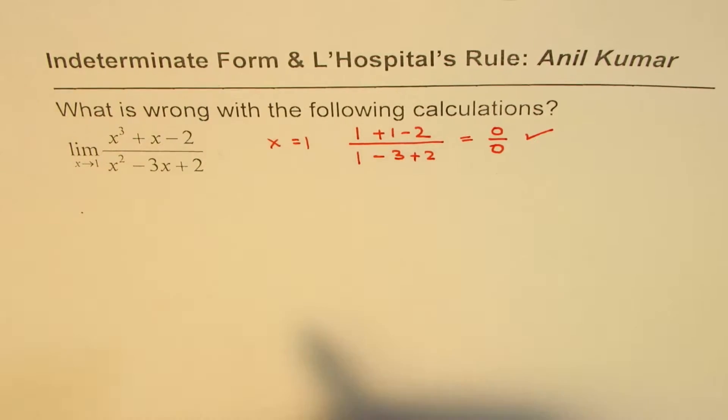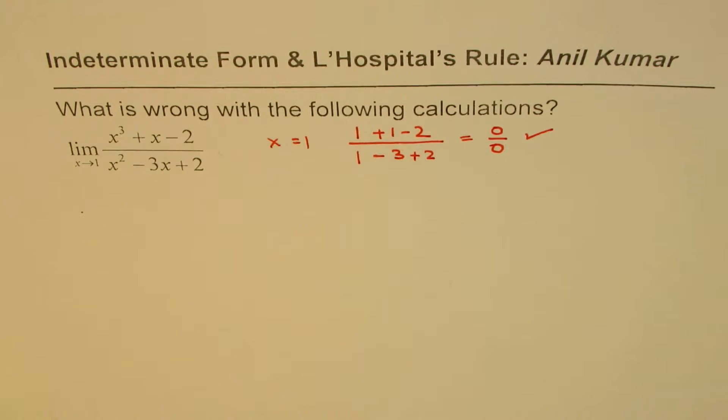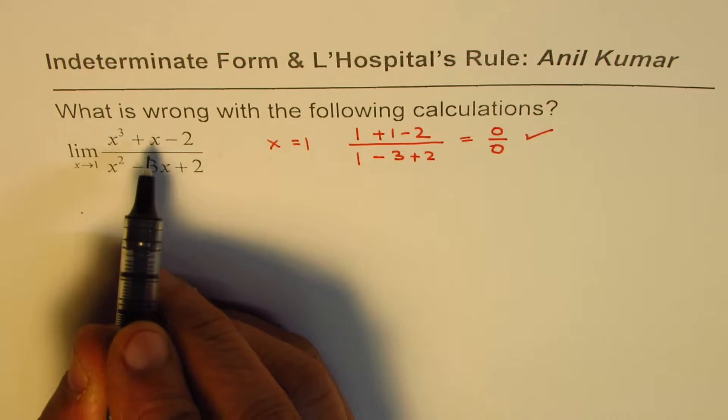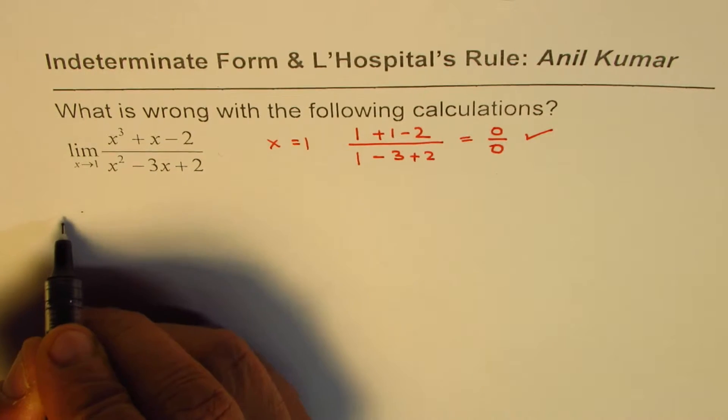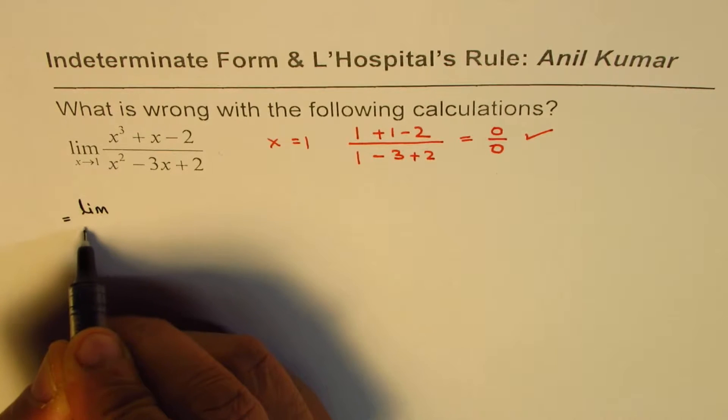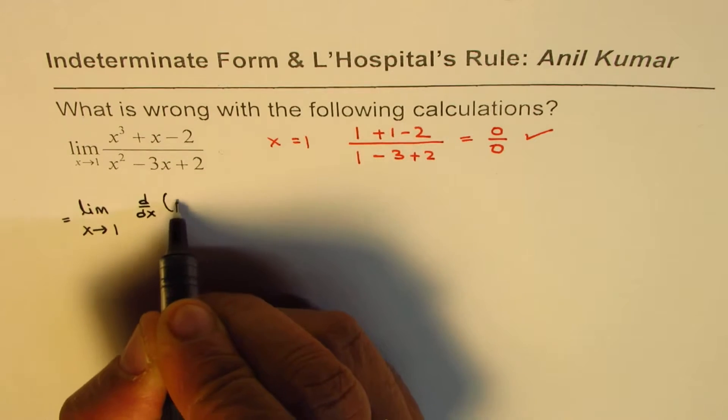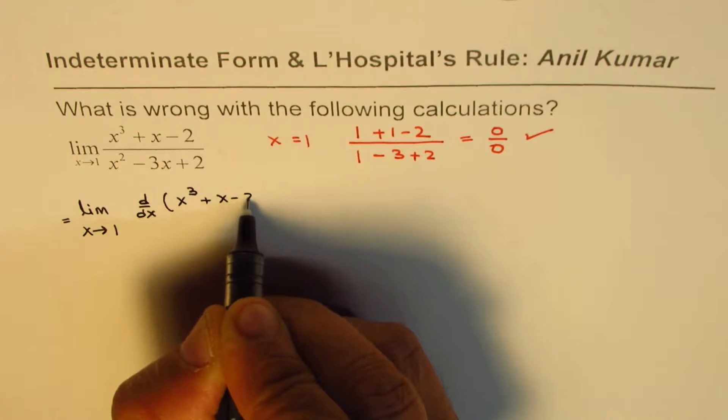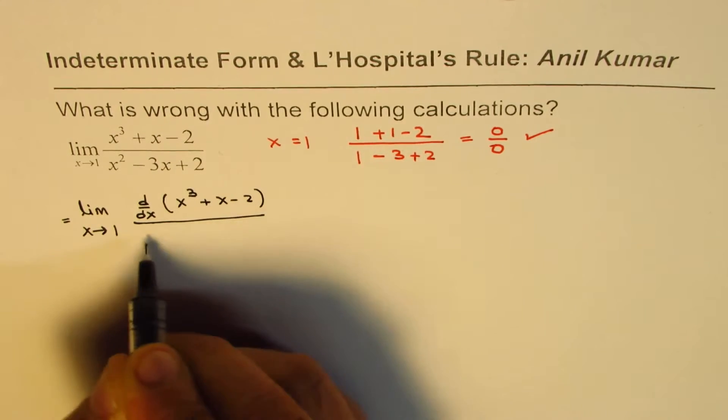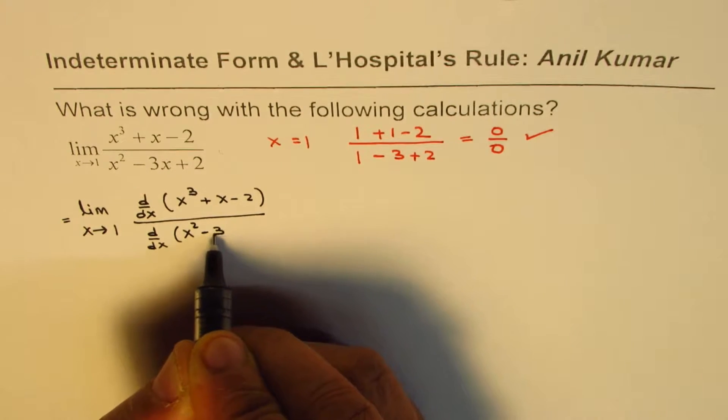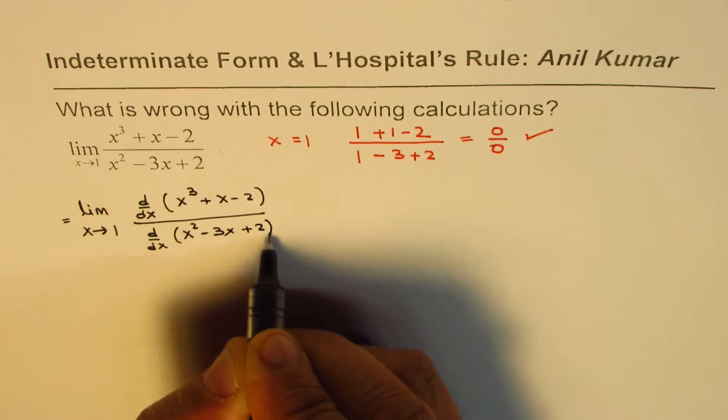So that is the required indeterminate form when we can apply L'Hospital's rule. Therefore, the limit of the ratio of these two functions is equal to the limit of their derivatives. We can write this as d/dx of (x³ + x - 2) divided by d/dx of (x² - 3x + 2).